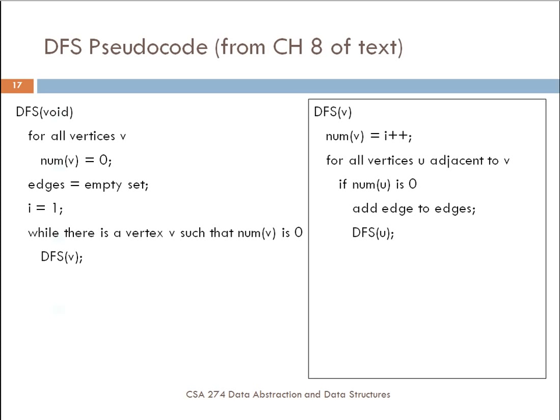The algorithm for the depth first search, which you'll find in chapter 8 of the text, has basically two parts. The part on the left is basically the encapsulating method or encapsulating algorithm. What this algorithm does is it marks each of the vertices has an attribute that is essentially saying whether or not the vertex has been visited already, and so it basically sets it to zero initially.